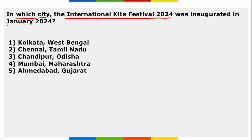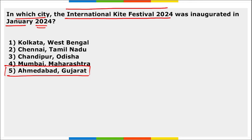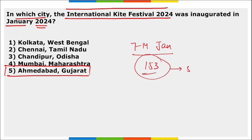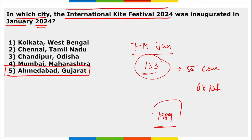The International Kite Festival was inaugurated in Ahmedabad, Gujarat in January 2024. It was held from 7th to 14th January 2024. The festival marks Makar Sankranti — when winter begins turning to summer. It features over 153 international kite flyers from 53 countries, 68 national flyers from 12 states, and 865 kite enthusiasts from 23 cities in Gujarat. The International Kite Festival has been celebrated in Ahmedabad since 1989.